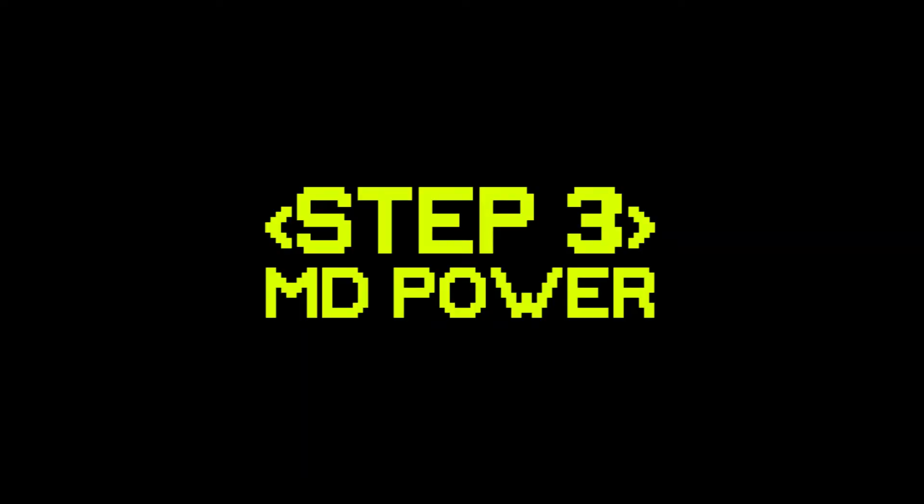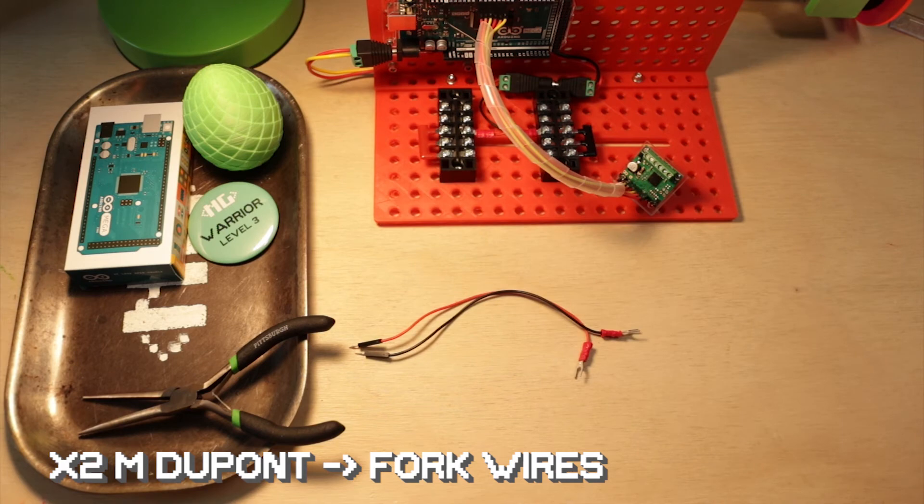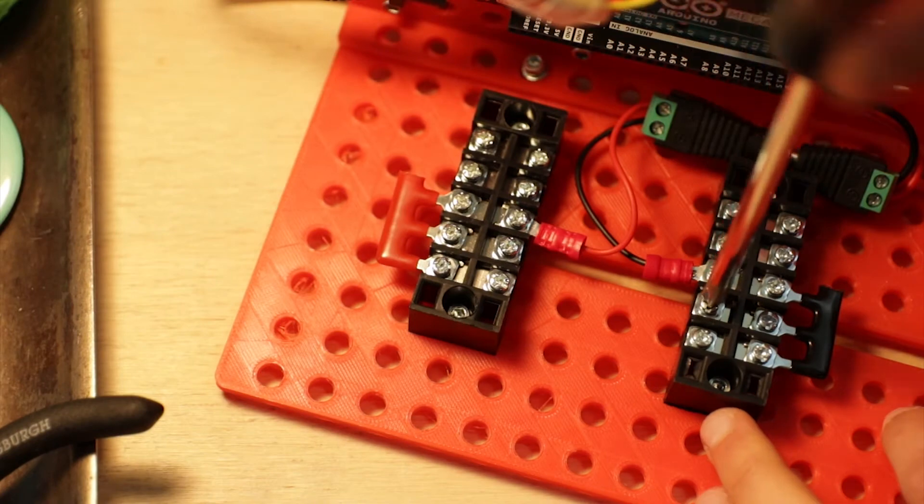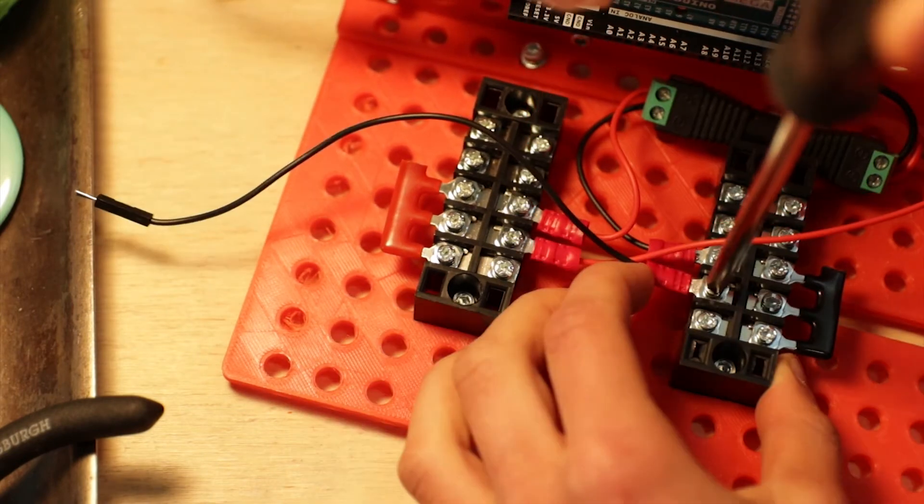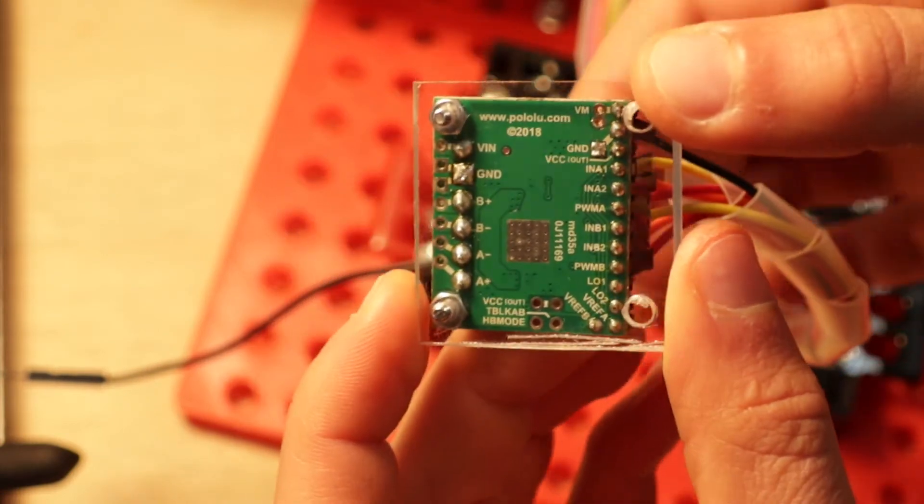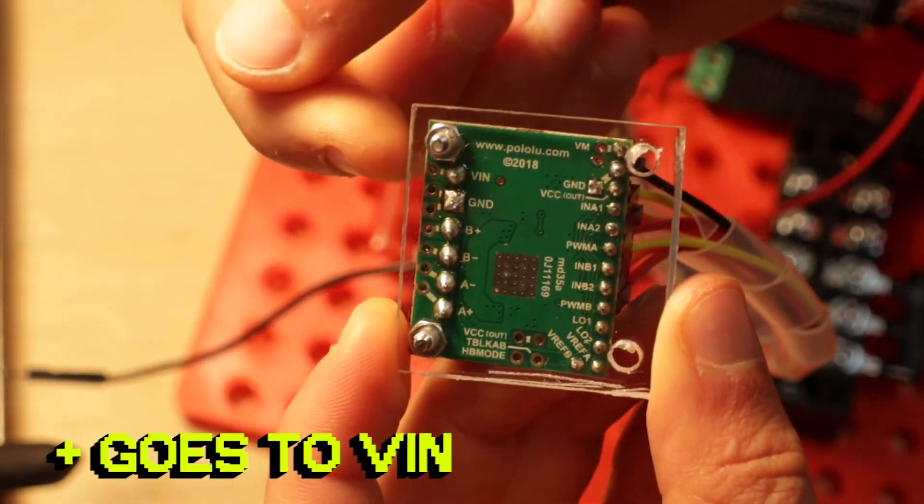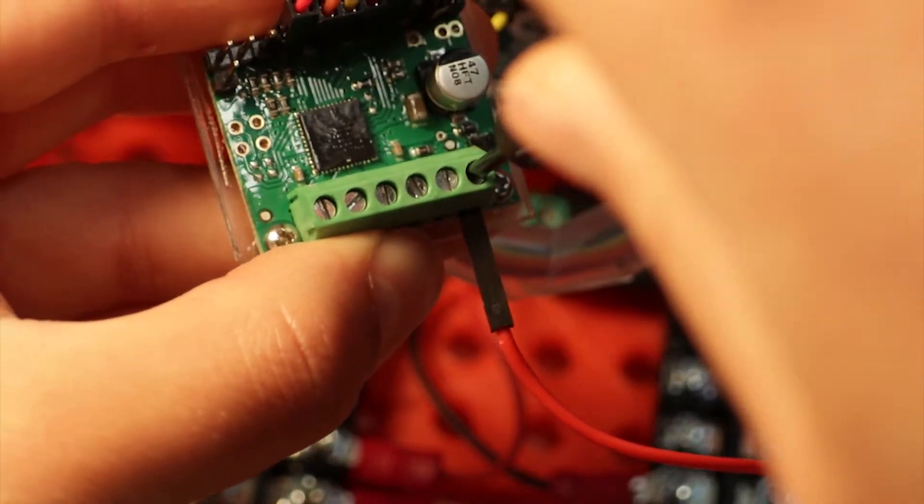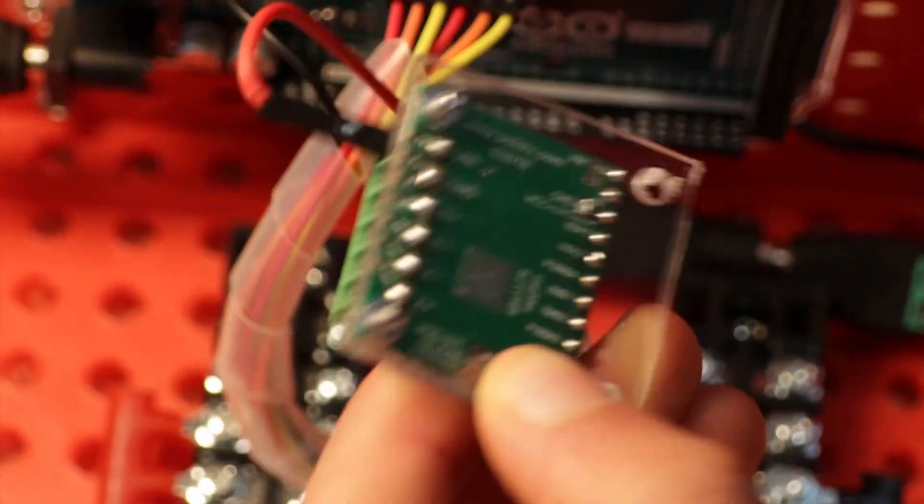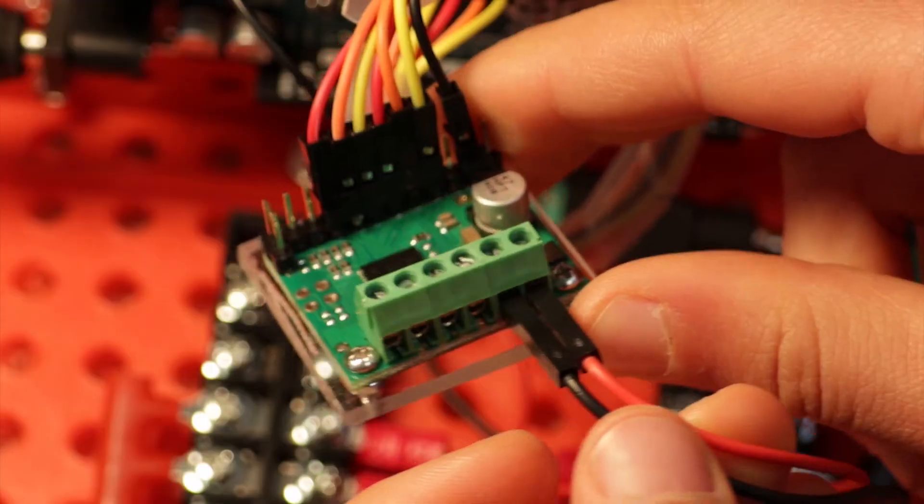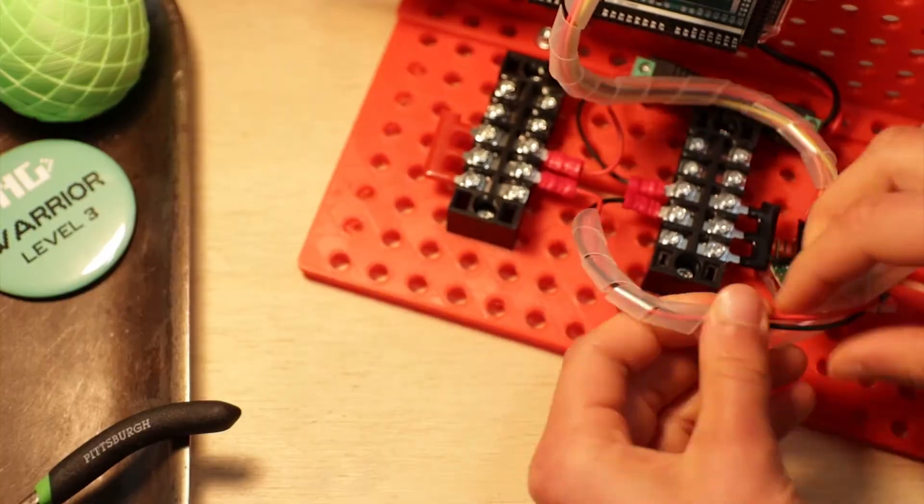Step three. You're going to grab two fork connector to male Dupont connector wires - mine are about six inches in length - and one length of cable sleeve. Screw the positive fork connector into the positive terminal block and the negative fork connector into the negative terminal block. Now this part is important. That positive or red wire needs to be screwed into the terminal on the motor driver labeled VIN or voltage input. And the black negative wire needs to be screwed into the terminal on the motor driver labeled GND, aka ground. Then you're going to throw that sweet cable sleeve on it.